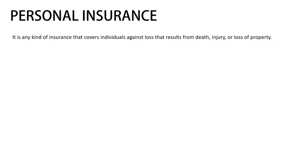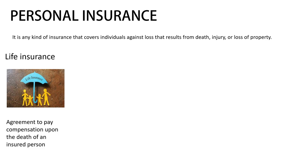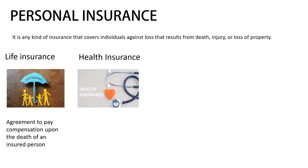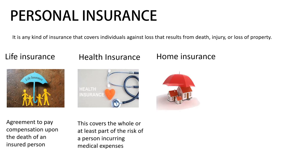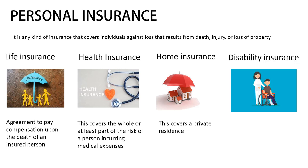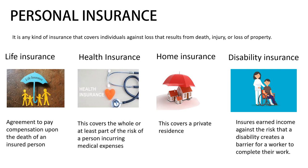Personal insurance covers individuals against loss resulting from death, injury, or loss of property. Life insurance is an agreement to pay compensation upon the death of an insured person, and sometimes includes health insurance. Health insurance covers all or part of the risk of a person incurring medical expenses for various diseases. Home insurance covers a private residence. Disability insurance protects income against the risk that a disability creates a barrier preventing a worker from completing their work.